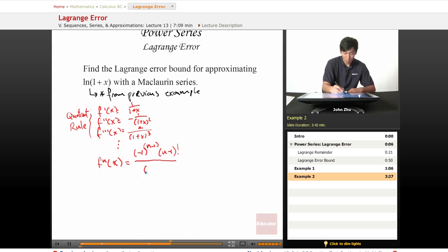all over (1+x)^n. So 1+x here is to the first power, second power, third power, so (1+x) to the n.